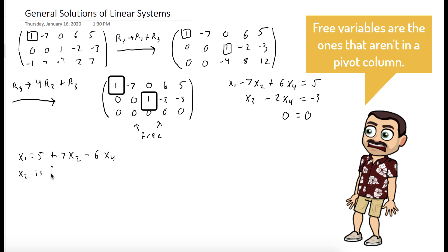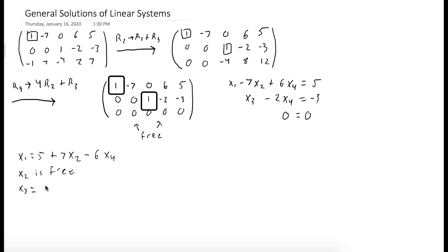x2 we said was free. x3 is equal to negative 3 plus 2x4. And x4 is free.